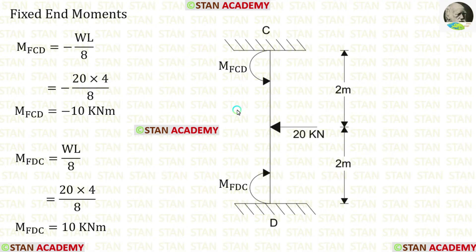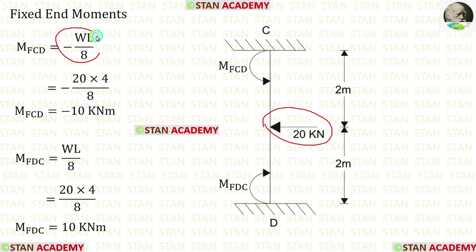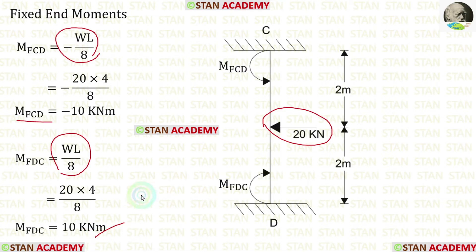Now let us take column CD and find the fixed end moments. In column CD there is a point load of 20 kilo Newtons acting at the center. The formulas for fixed end moments are minus WL over 8 and plus WL over 8. Using these formulas we can find M_CD and M_DC.